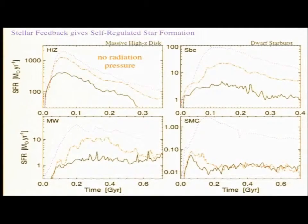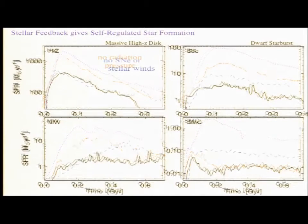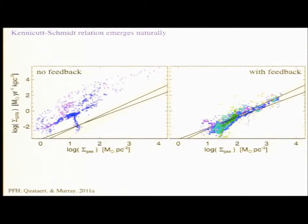On the other hand, if we keep everything else in place and remove heating from supernovae and stellar winds, we see the opposite, where it has very little effect in these massive disks because all that thermal energy is radiated away very efficiently, but it has a much bigger effect in low-mass galaxies. Even though removing radiation pressure didn't have much effect in the dwarf galaxy, we're still including the warm gas pressure from photoionization heating and photoelectric heating. We're still including stellar winds. If I remove all of those mechanisms and only include supernovae, even in this dwarf galaxy, it's a disaster.